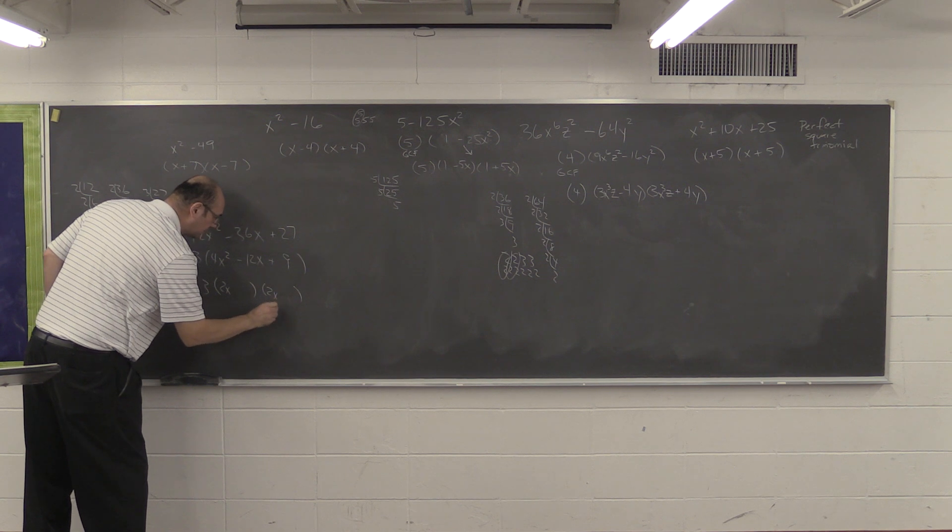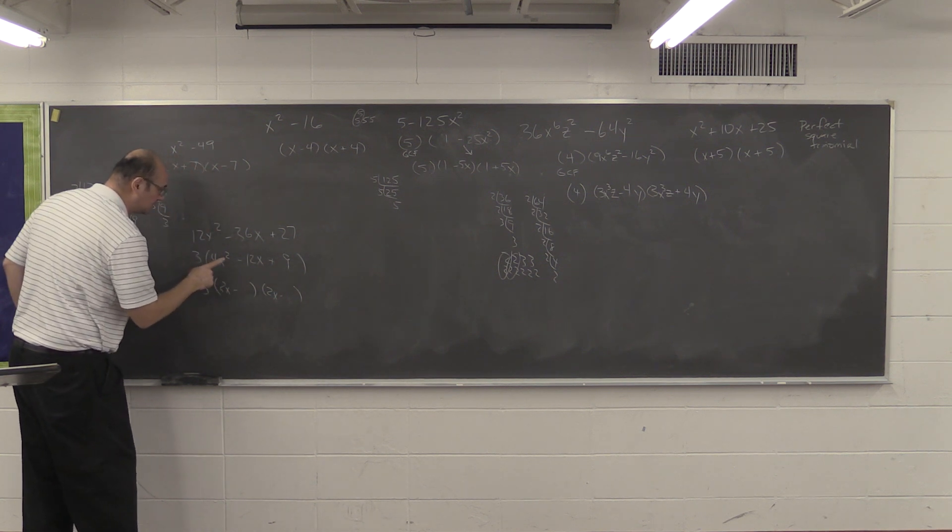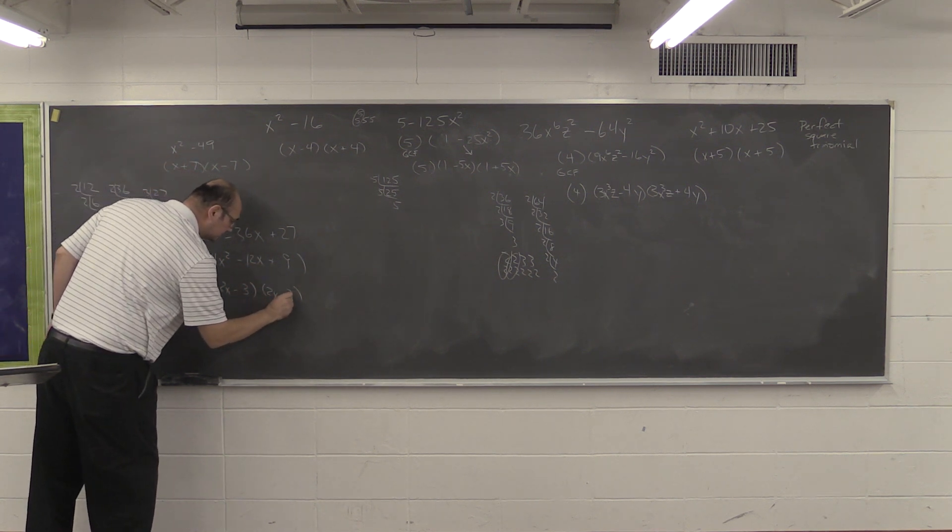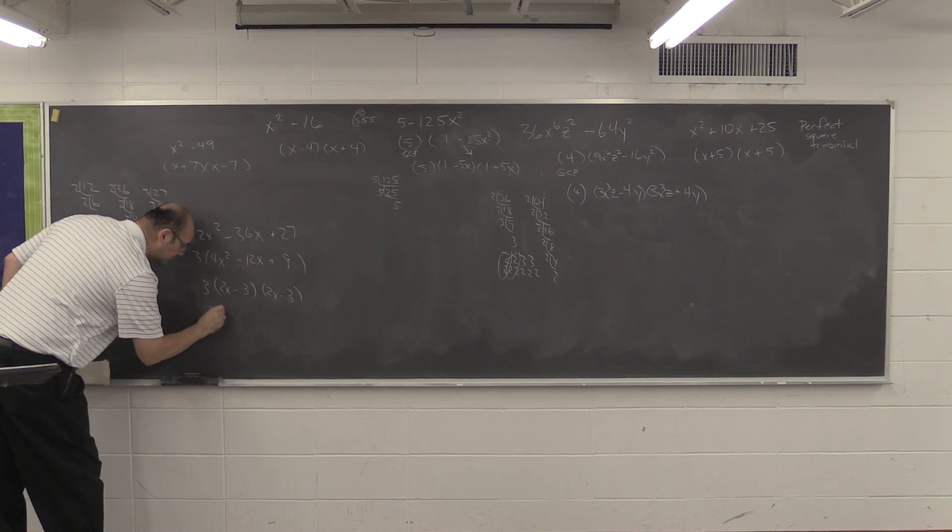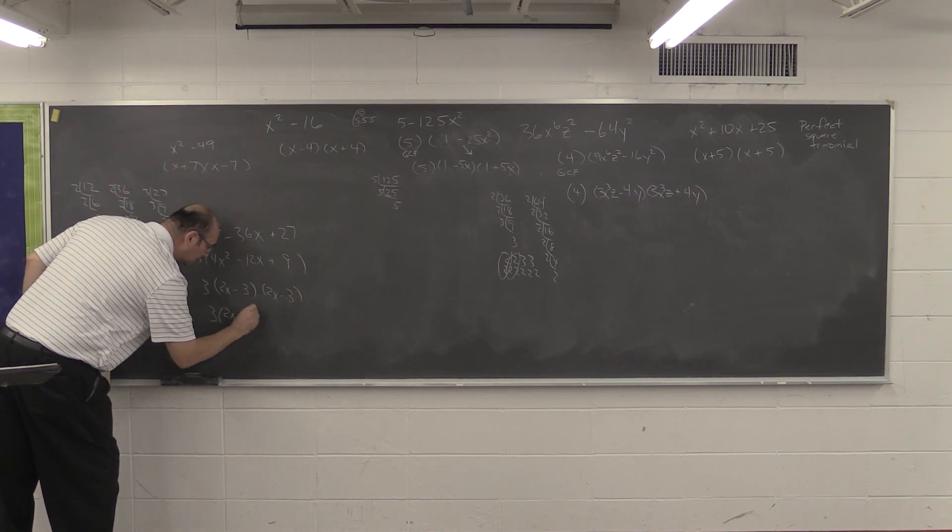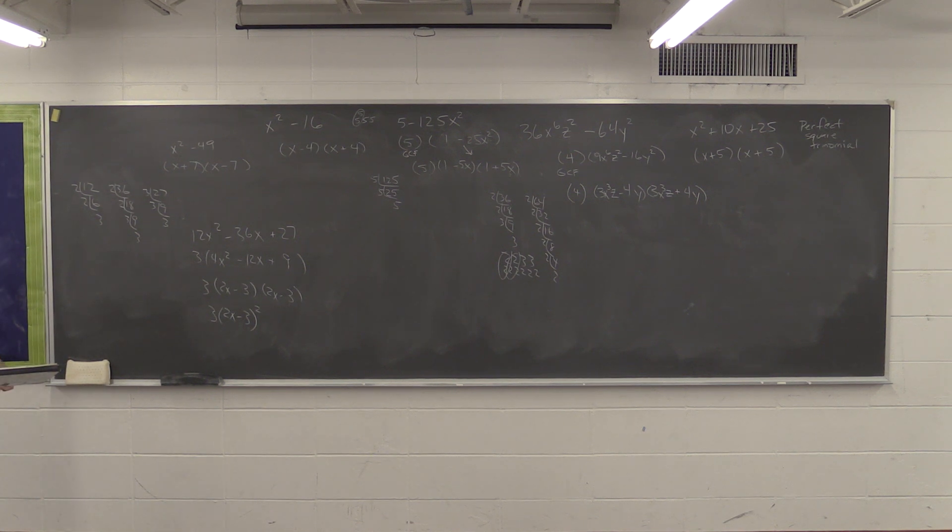9, we'll put 2x there, right? And this is minus. And then the square root of 9, or what times what, is 3. This would be the same. So, we could actually write it as 3 times 2x minus 3 squared.